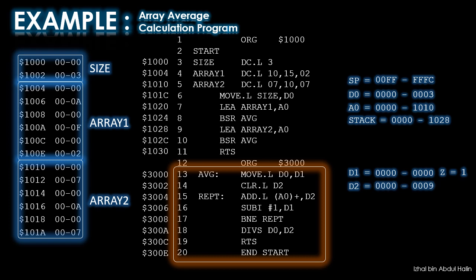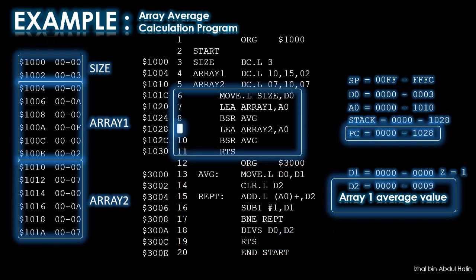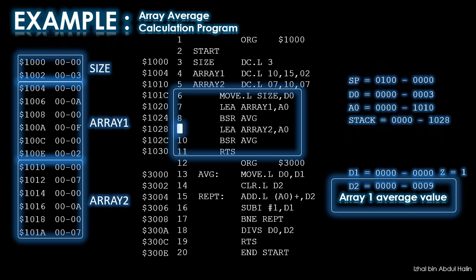The program counter is now pointing to 300C and is ready to execute the RTS instruction. When executed, the stack's value is popped into the program counter. This causes the program to return back from the subroutine to the main program, exactly at the instruction where it left off. The stack pointer is incremented by 4, back to its original value, 1000000.